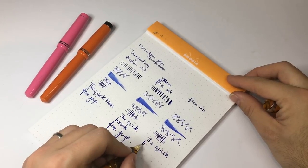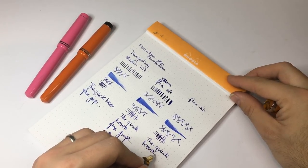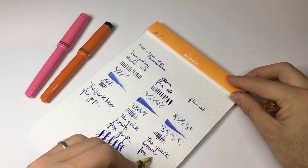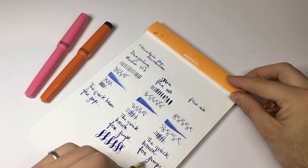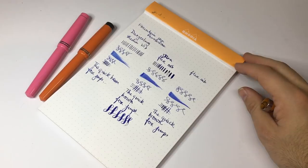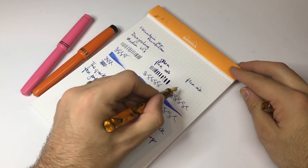Now I'm writing the same way as I wrote here, applying a tiny bit of pressure occasionally just to sort of let the tines open up. And you can see there is, yes definitely some line variation to be had there.